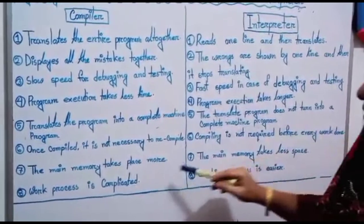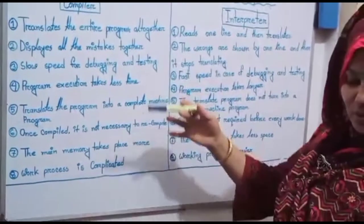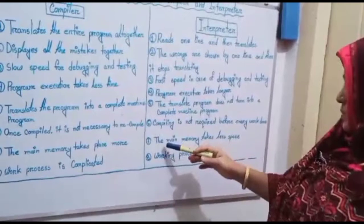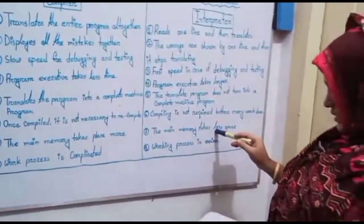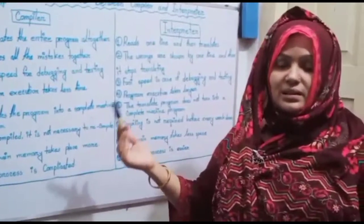Number seven: the main memory takes more space with compiler, that means memory requirement is more. Interpreter number seven: the main memory takes less space, memory required is less.